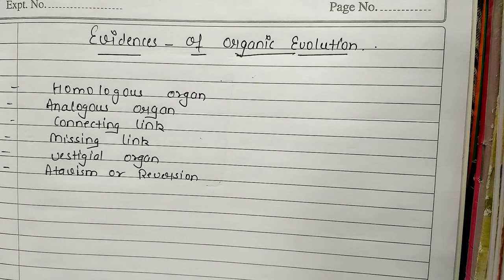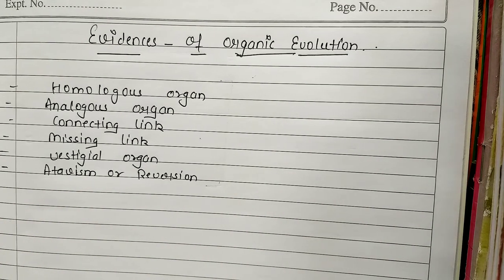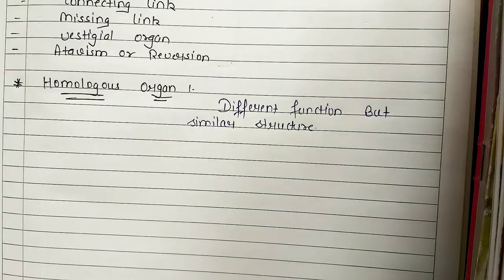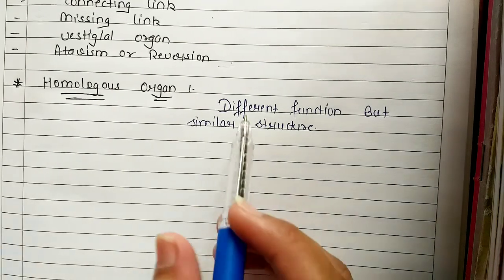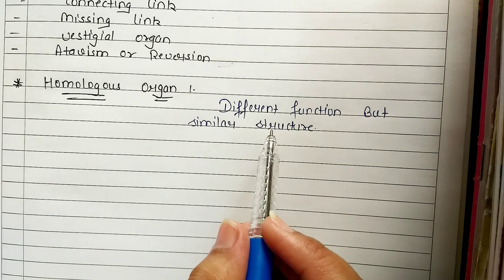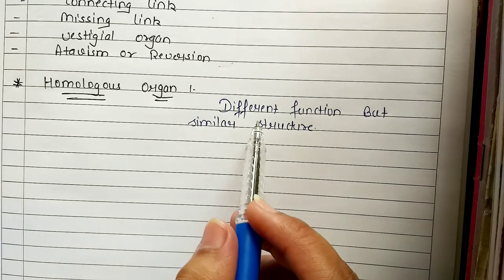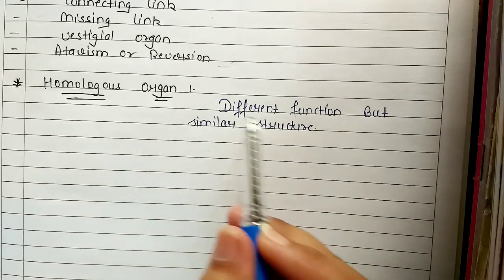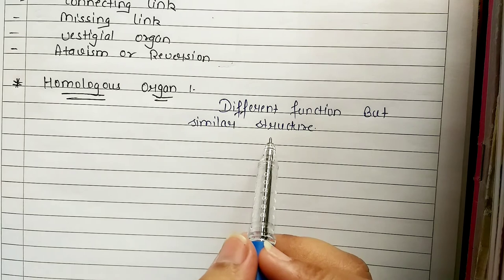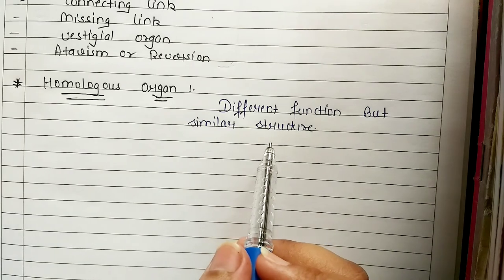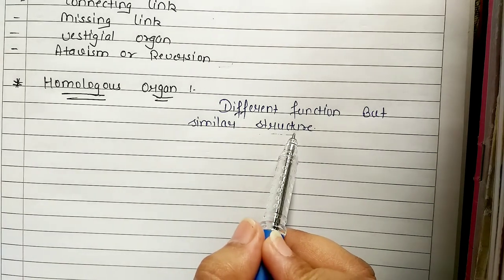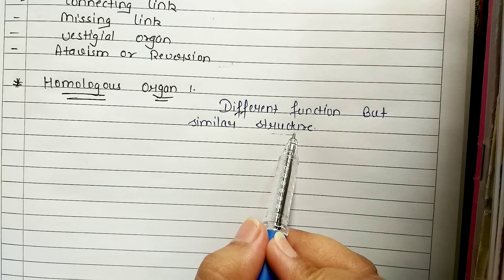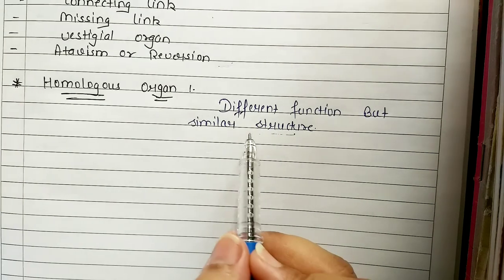Let's start with Homologous Organs. We have written Homologous Organs. The most easy and small definition is that homologous organs will have different functions but the same structure. The structure is similar — not exactly the same shape, but the same origin.